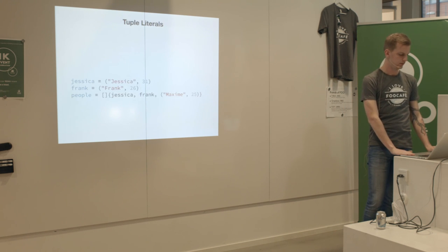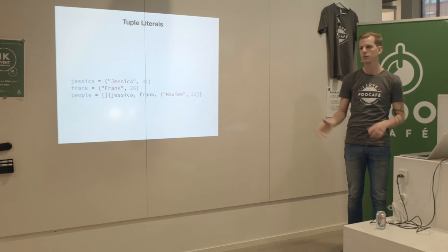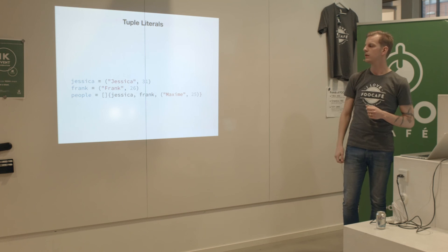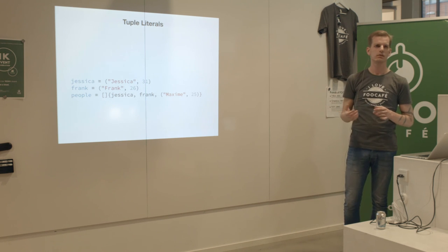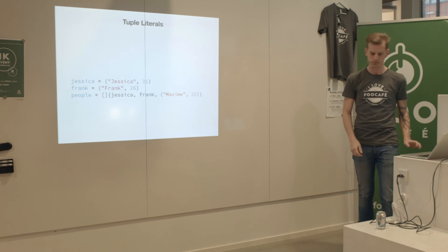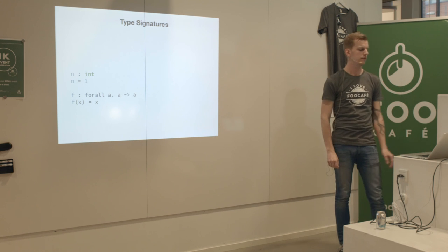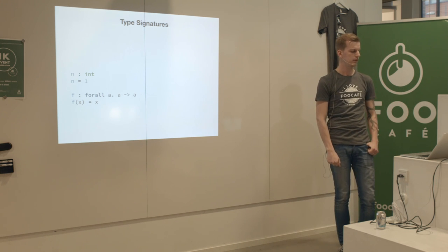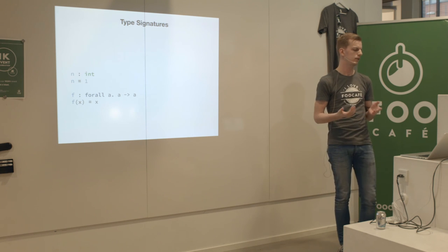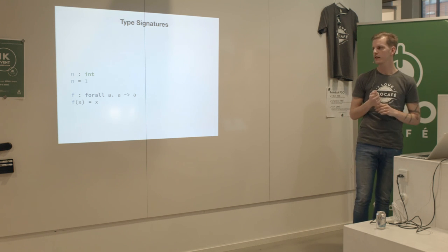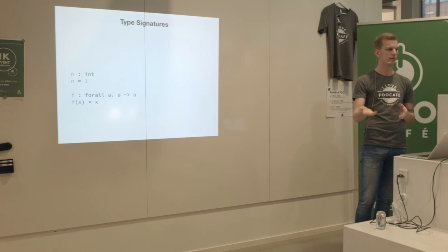Combining those two features, we create two tuple values with type string and int - Jessica and Frank - and create a slice with tuple elements. Oden has type signatures too: you write a name, a colon, and the type to explicitly annotate the type of a value. Here we say n is an int and give it a value.